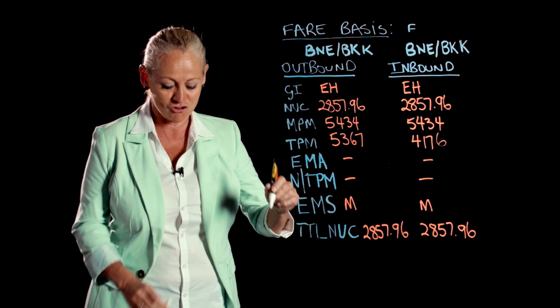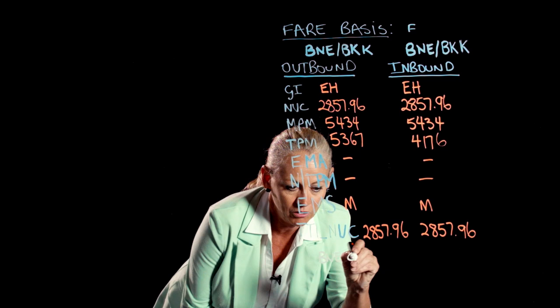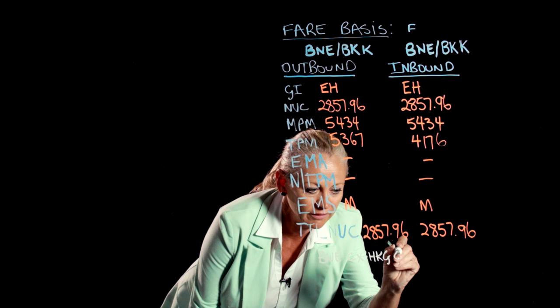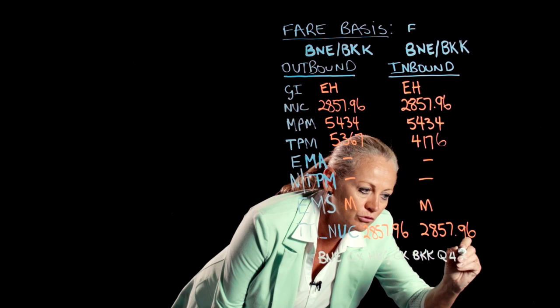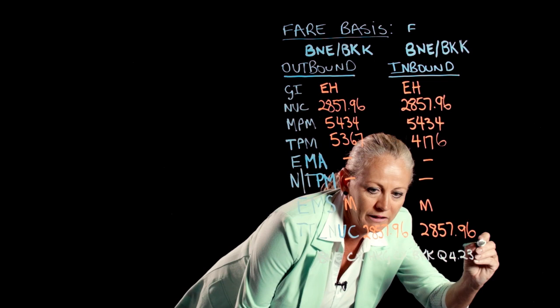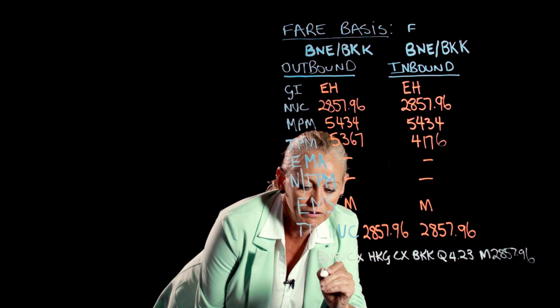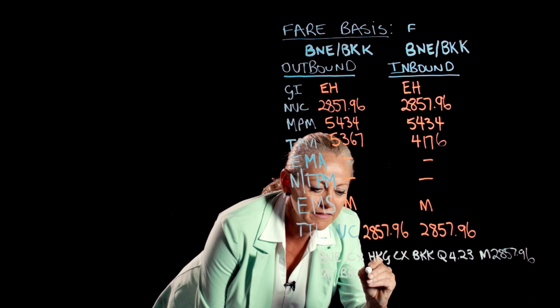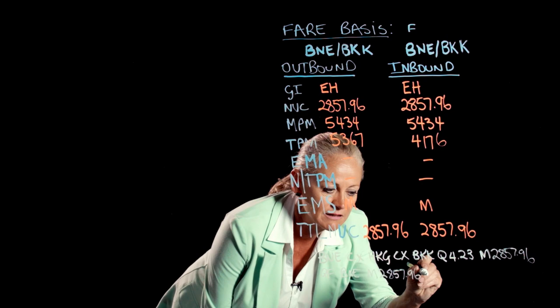So I'm going to show you now how this would all appear on a ticket. So we've got the carriers — we're flying Brisbane on Cathay to Hong Kong, on Cathay to Bangkok. This is where we show the Q surcharge — it is a Q, 4.23. Then coming back, we've got the NUC from Brisbane to Bangkok. We show in on miles, 2857.96. We then write NUC to show our total NUC. So we add up all our NUCs to get a total NUC, and that comes to 5720.16.